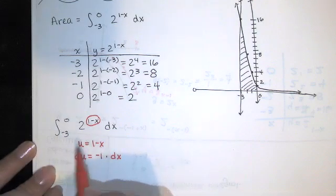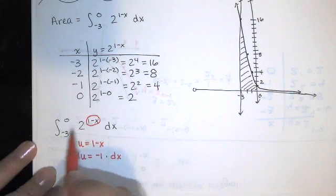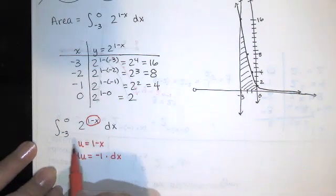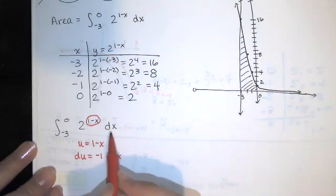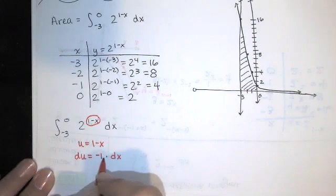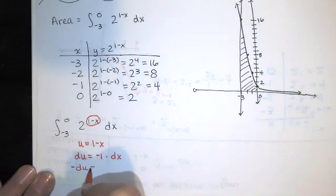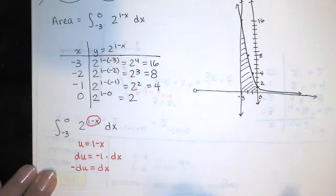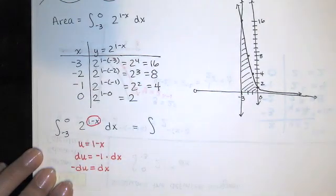Now if I'm doing a u-sub, I have to take everything up here, including the bounds. And I need to write all of that in terms of u instead of x. Right now, all of this is in terms of x. So I need to find dx in terms of u. So I'll take this equation and I'll solve it for dx by multiplying both sides by -1. So dx is -1 du.